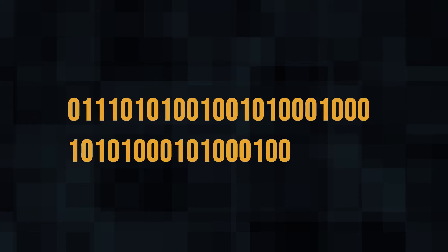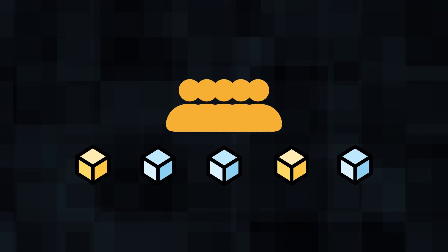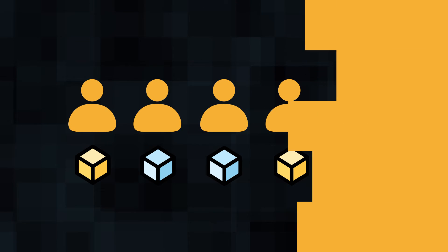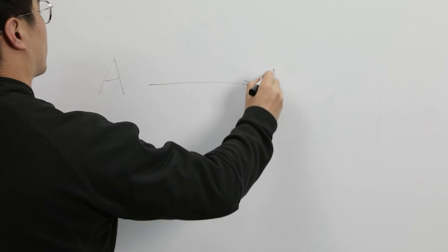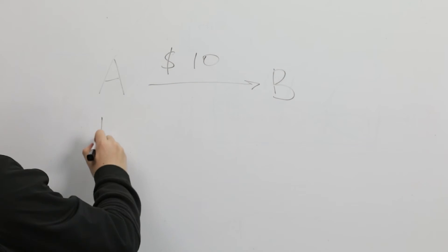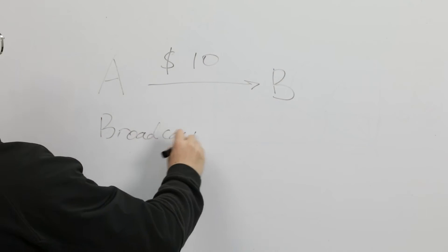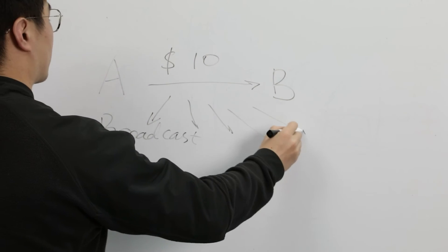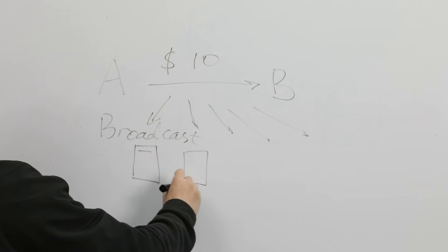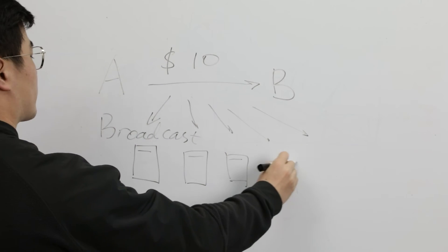The information is stored in a reliable database, and every change of information is known to everyone. For example, let's consider a class as the entire internet, and each student in the class as a node of the internet. One day, student A lent $10 to her classmate B, and she announced it loudly so that all the students in the class recorded this incident in their ledgers.